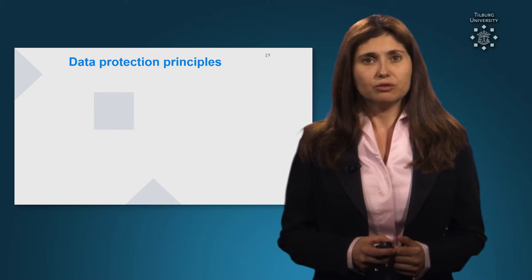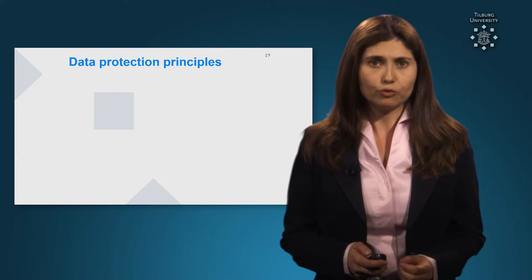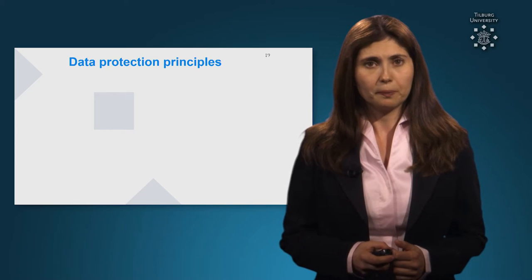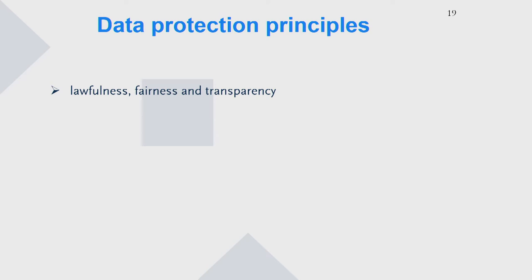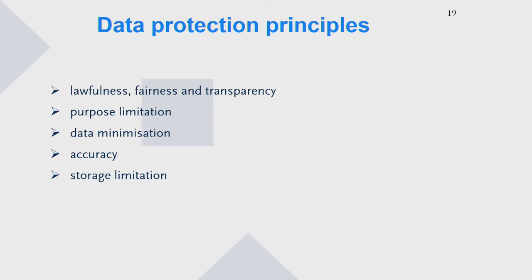The General Data Protection Regulation contains a list of data protection principles that you need to comply with. These principles are lawfulness, fairness and transparency, so your data need to be collected and processed in a lawful, fair and transparent way. You need to respect the purpose limitation principle, so you need to have a concrete purpose for which you process data. The data minimization principle means you need to collect as few data elements as possible. They need to be accurate and you need to store them for a limited period of time — only for as long as is absolutely necessary to reach your purposes. Finally, you need to do that in a secure way.